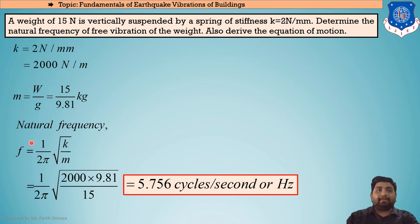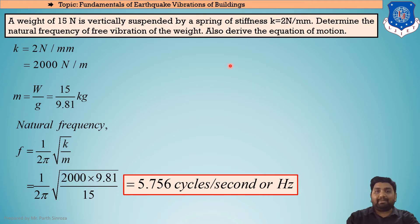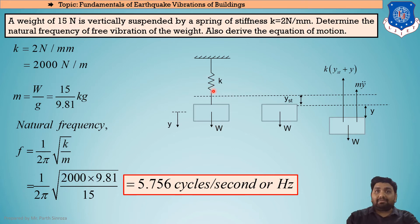Part 1 is complete. Moving to Part 2: deriving the equation of motion. To derive it, we draw what is given — a weight of 15 Newton vertically suspended by a spring. The figure shows a rigid ceiling, a spring with stiffness k connected below it, and the mass/weight at the bottom. Since it is vertically suspended, displacement is in the vertical direction, denoted y.